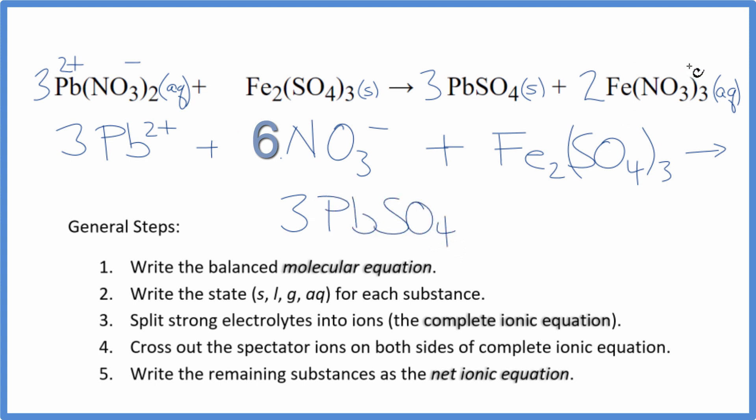And then, here, we know we have nitrates are 1 minus. We have three of them. So, the iron has to be 3 plus. So, 2 iron 3+ ions. And then, 2 times 3, 6 nitrates. And I just realized when I did this calculation up here for these nitrates, 3 times 2 is 6. So, this number should be 6. So, be careful with that. It's easy to make that mistake.